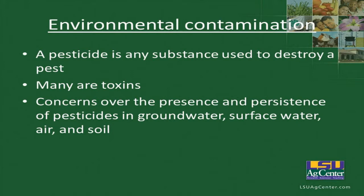Finally, environmental contamination. A pesticide is any substance used to destroy a pest. Many are toxins, and the presence and persistence of these pesticides in groundwater, surface water, air, and soil are a concern to the environment — tied in with social issues going on in the world.